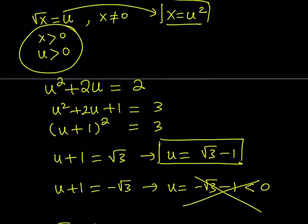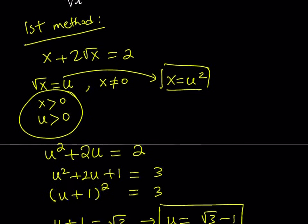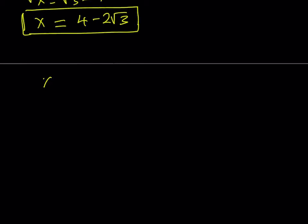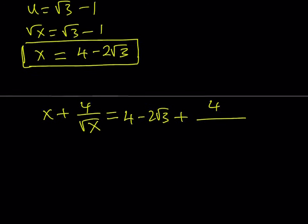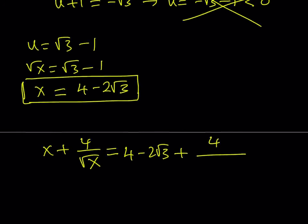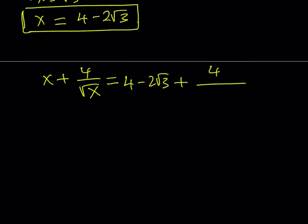So let's go ahead and plug that in, since we're trying to evaluate another expression, which is x plus 4 over square root of x. Now we got the x value, so we can easily substitute that into our equation, and that gives us 4 minus 2 root 3 for x plus 4 divided by square root of x. Remember, u is equal to square root of x, and square root of x is equal to root 3 minus 1.